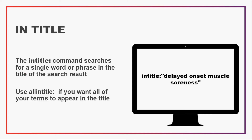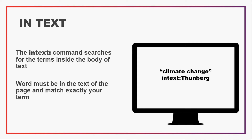Another pair of commands are the intitle and intext commands. The intitle command tells Google to look for whatever follows it in the title of the webpage. You can also use the allintitle command if you want your entire search term looked for in the title. The intext command does a similar thing but searches for your terms in the body of the website. For example, '"climate change" intext:Thunberg' will only show results where climate change is a key term and Thunberg is mentioned somewhere in the text.